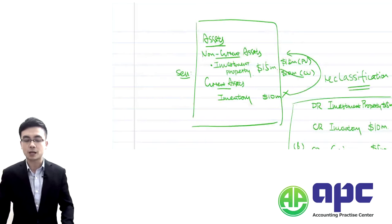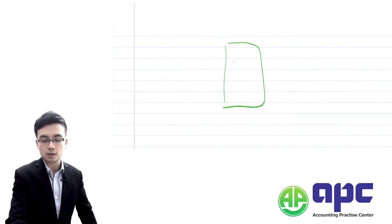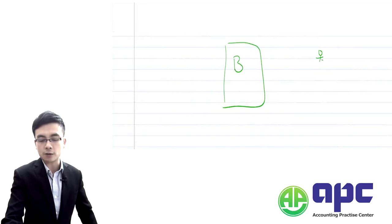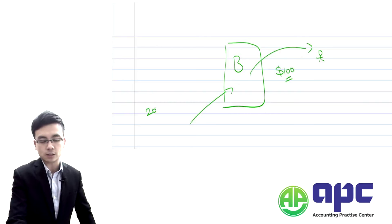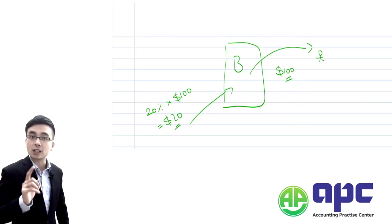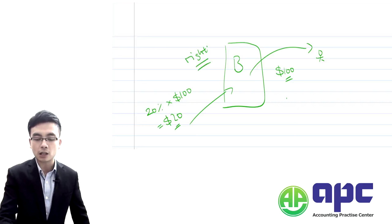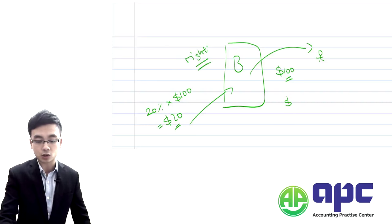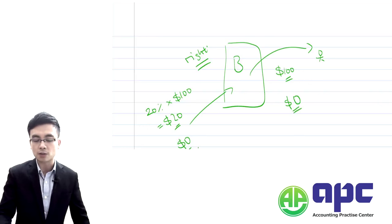So if they sold $100 worth of ticket sales, because you bought a right to enjoy 20% of them, you enjoy $20. But it is just a right to enjoy those sales. That means if they have no sales at all — zero — then 20% times zero gives you zero money.